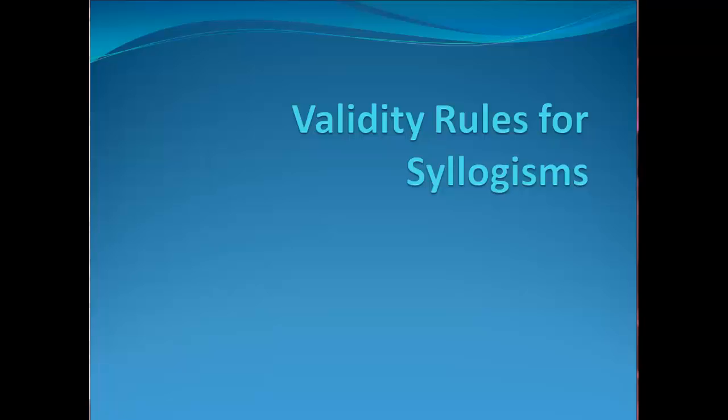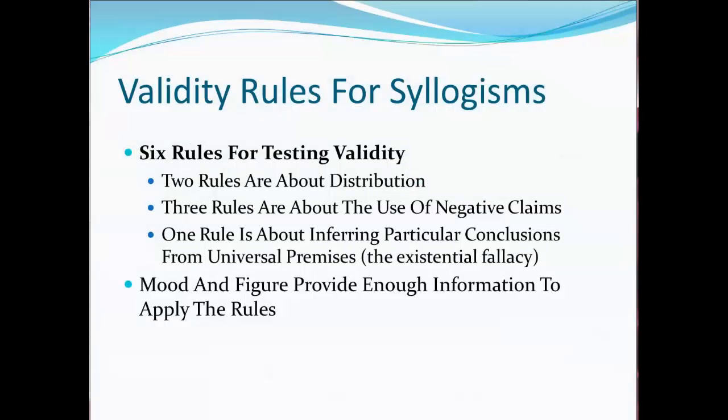This is a tutorial about using rules to test the validity of syllogisms. In a previous tutorial, I said that if you know the mood and figure of a syllogism, there is a way to determine the validity of the syllogism at a glance. This is possible by applying six rules to the syllogism. If it passes all six, the syllogism is valid. If it fails any one of the rules, it is invalid.